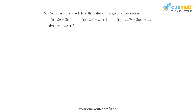Question 5 of this exercise says: when a equals 0 and b equals minus 1, find the value of the given expressions. Basically we will have to put the value of a, that is 0, and b, that is minus 1, in the given expressions and find their values.